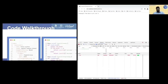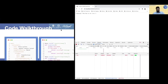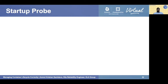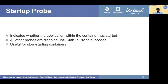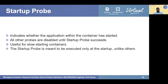Before moving to the next section, startup probe must also be discussed. A startup probe indicates whether the application within a container has started. All other probes are disabled until the startup probe succeeds. It is mainly used with slow-starting containers, and a decent failure threshold — perhaps 10 or 15 — is generally used. It is meant to be executed only at startup, unlike others which run periodically. It may share the same probing mechanism and even the same path as the liveness and readiness probes, but its behavior is different.